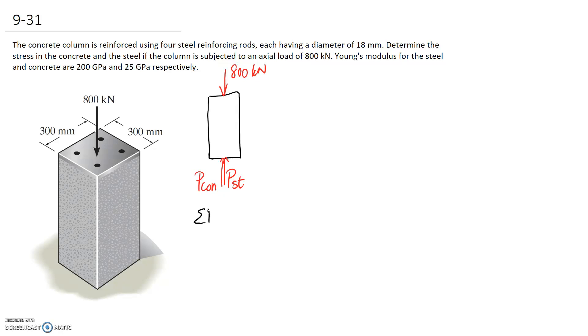So applying my equilibrium equation, sum of forces in the y-direction, I'm going to have the concrete plus the steel force minus the 800 kN which is applied. I'm going to put this into Newtons, so it's 800,000, has to be equal to zero.